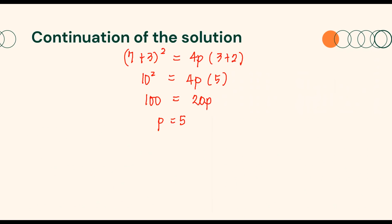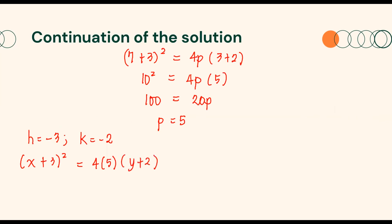Since p equals 5, h equals negative 3, and k equals negative 2, the equation in standard form is (x plus 3)² equals 4 times 5 times (y plus 2). Simplifying 4 times 5, we will have (x plus 3)² equals 20(y plus 2). This is our equation in standard form.